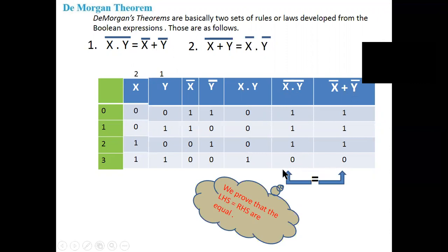Check whether x dot y whole bar and x bar plus y bar are equal. Yes, of course they are equal. So we prove De Morgan's law using the truth table. LHS and RHS are equal.